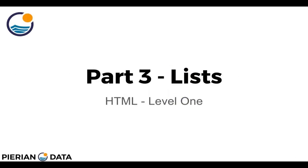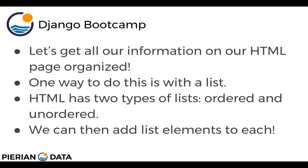Hello everyone, welcome to part three of HTML level one, where we discuss how to create a list in HTML. A lot of times you want to organize information on your HTML page, and one way to do this is with a list. HTML has two main types of lists: an ordered list and an unordered list. We can then add list elements to each of these types.